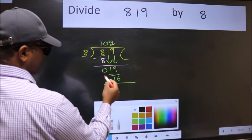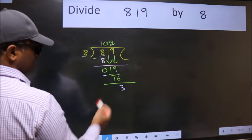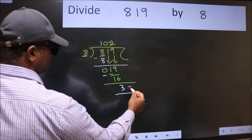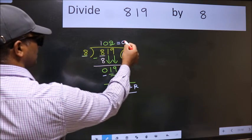Now we subtract. We get 3. No more numbers to bring it down. So we stop here. This is our remainder and this is our quotient.